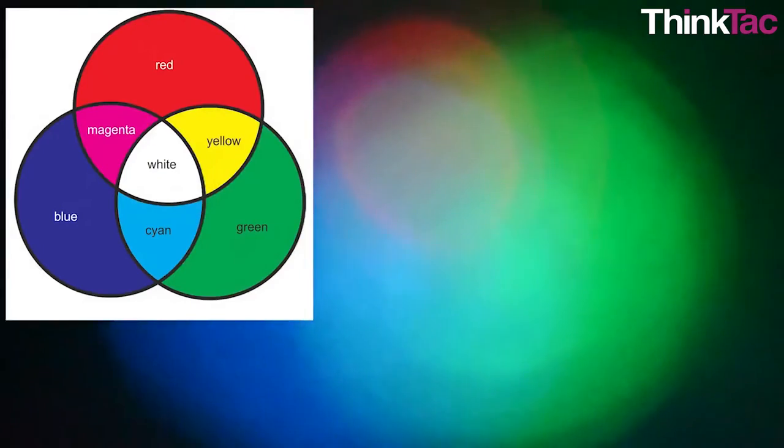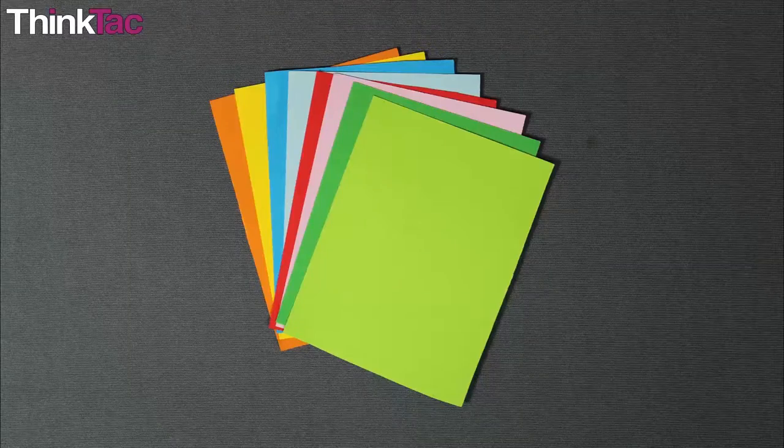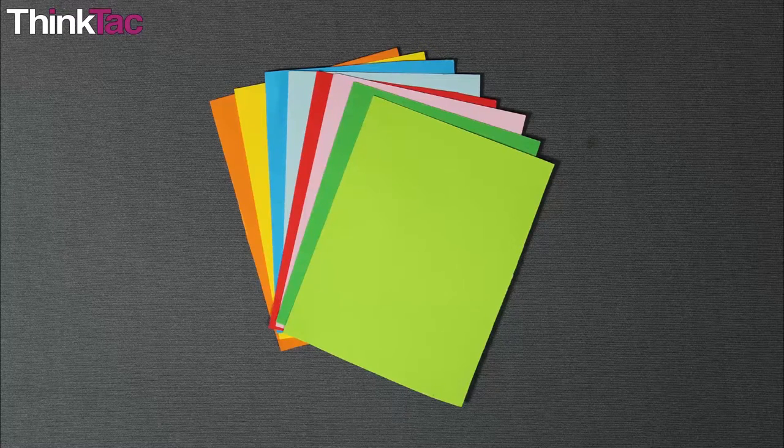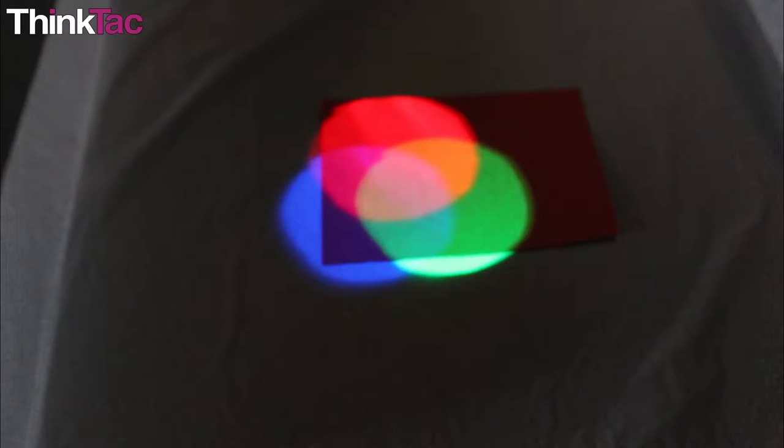You can also shine each pair on a white wall, place an object between them, and play with the shadows formed. Take different colored sheets of paper and shine the light from the tri-colored LED setup on them. Observe how each of the primary and secondary colors look on each colored paper. They may look the same and some may have changed color. Why do you think this happens?